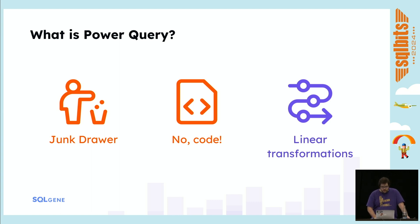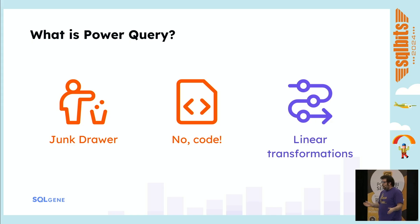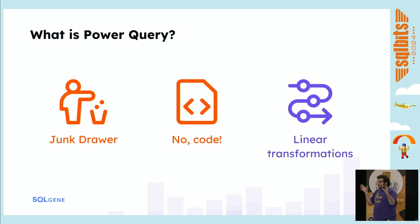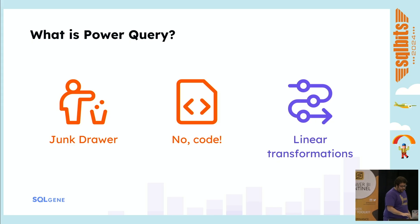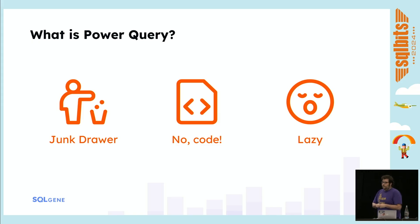And then the last one: linear transformations. The idea being presented is that it's like a recipe — it's like baking a cake. You do A, then B, then C, then D. That's the way it shows it to you; you can click on a specific step and see how the data is. But Power Query is lazy. You tell it to do something and it'll figure out the best solution, but it's not going to do exactly what you told it to do. That's the third lie when it comes to Power Query.